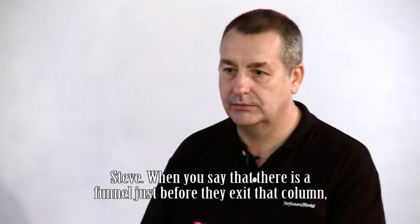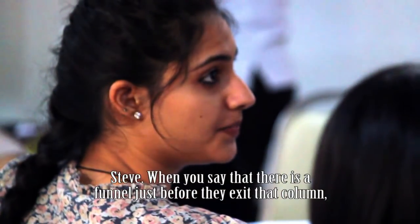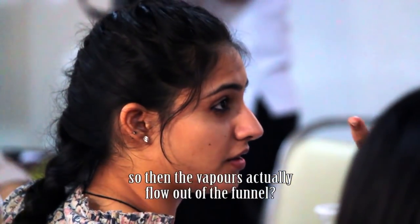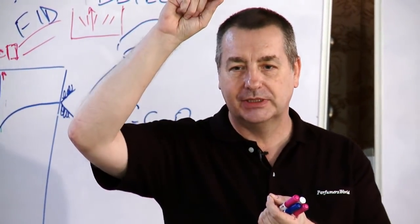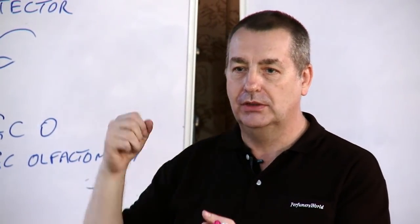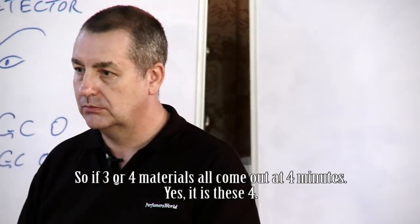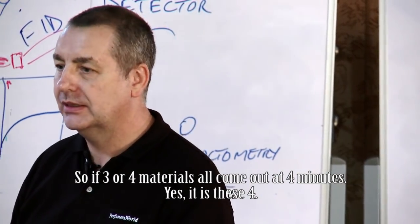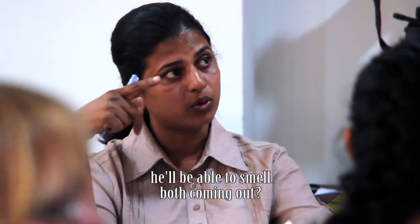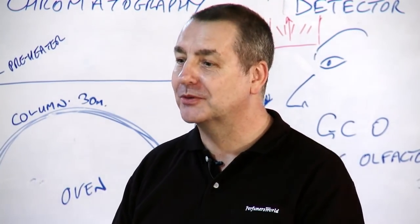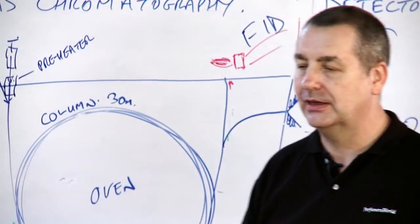When you say that there's a funnel just before they exit that corner, so the vapors actually flow out of the funnel? Yes. So, this is called a splitter and it's designed so that 50% goes up to the FID and 50% goes out to the funnel, the GCO. Three or four materials will come out in four minutes. I guess it is these four. I think there are two of them in that. So, if the perfumer sits at the other end, he'll be able to smell both coming out? If they're mixed together. Yeah, then there's a problem, of course, because you've got a mixture.